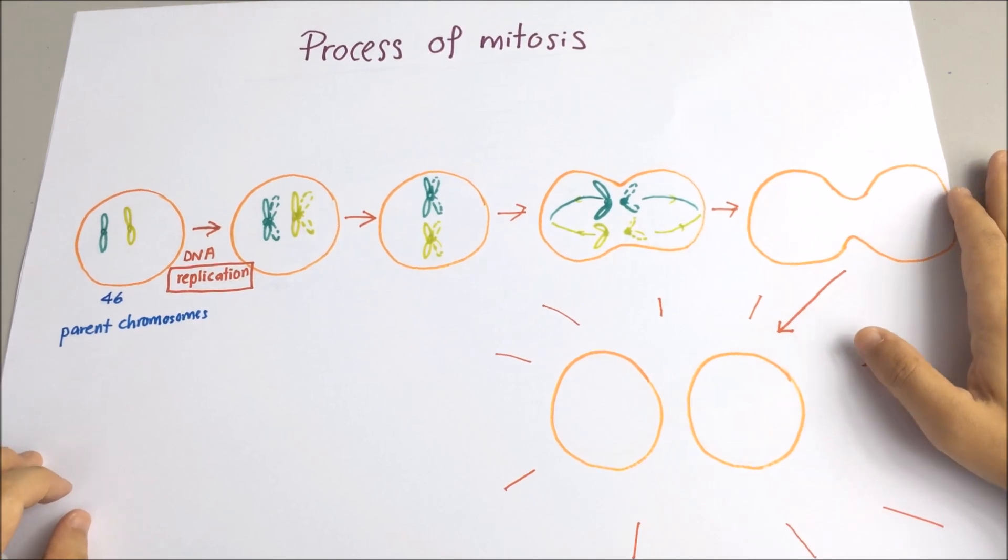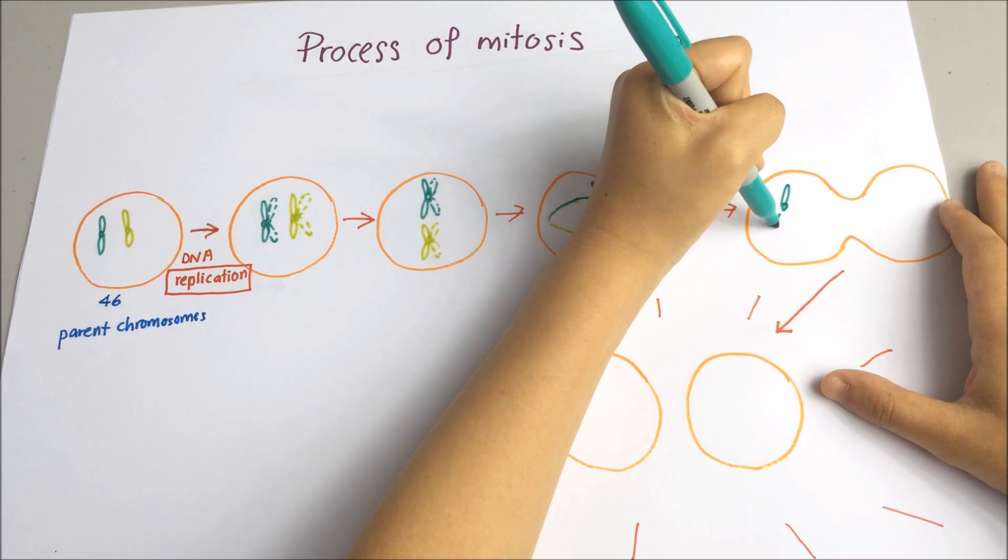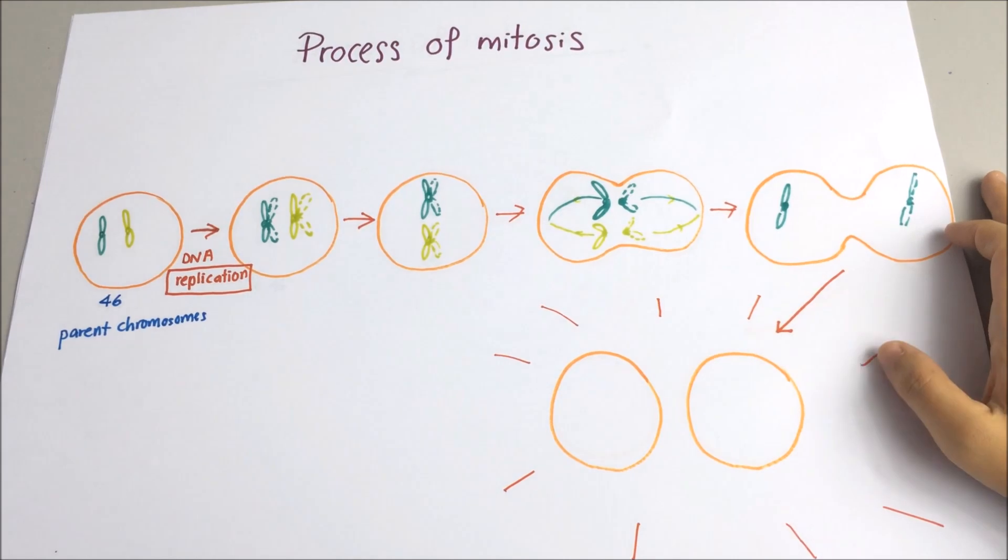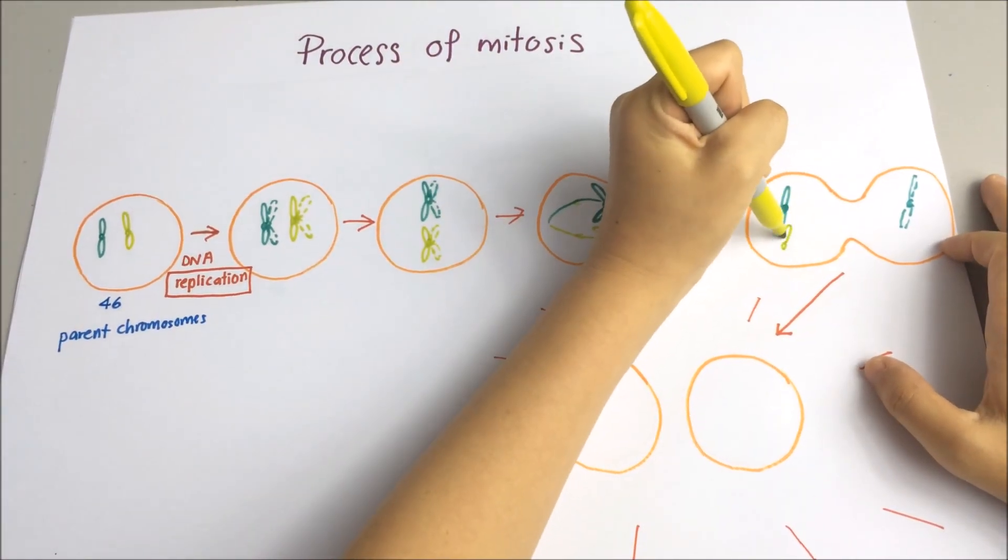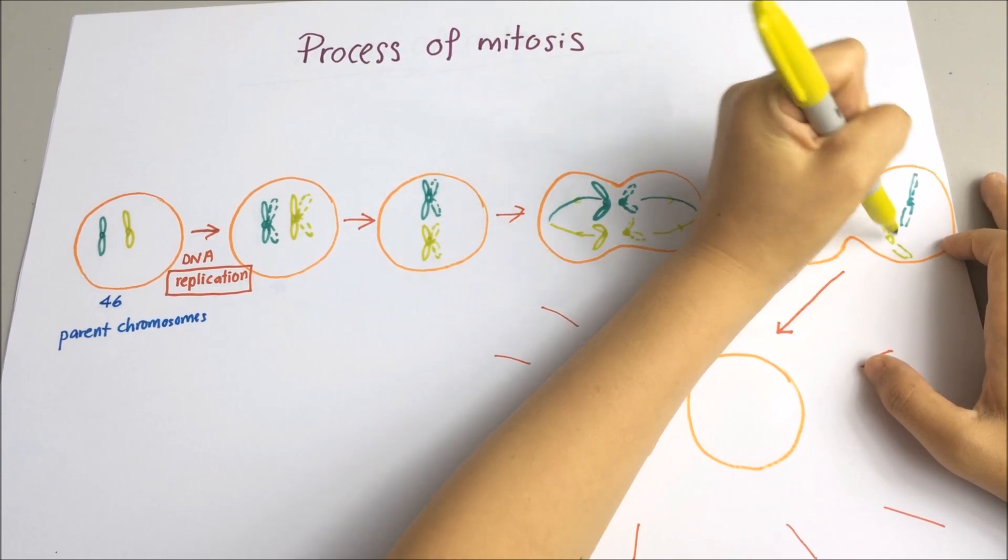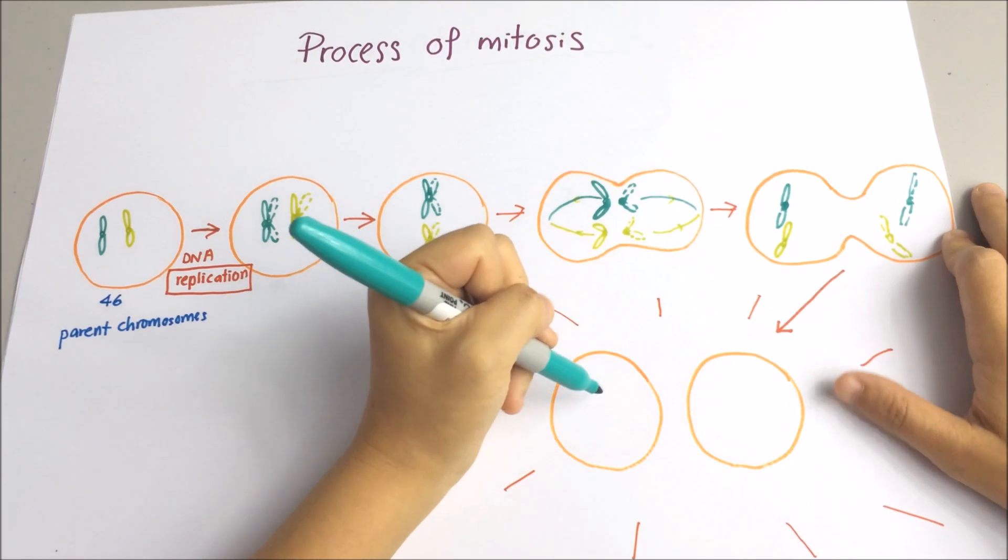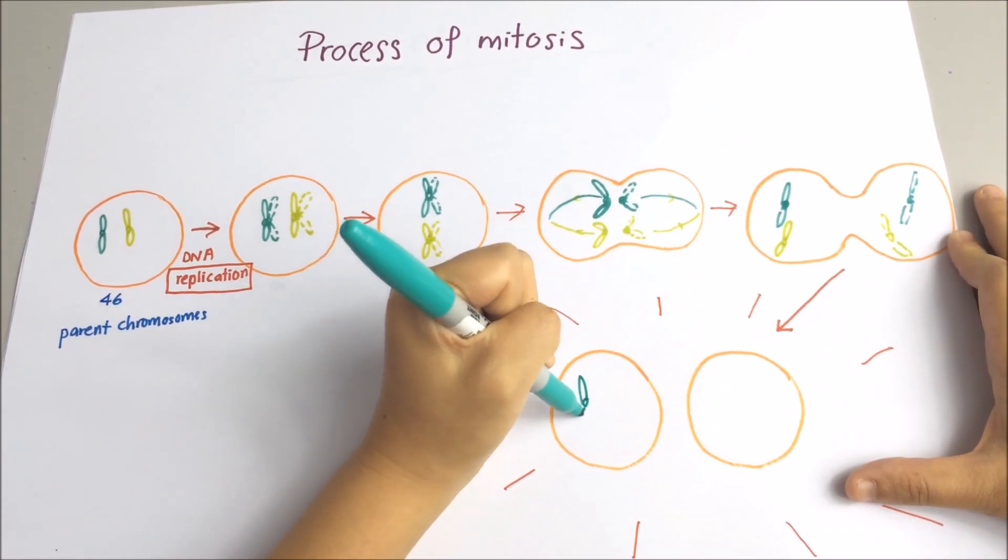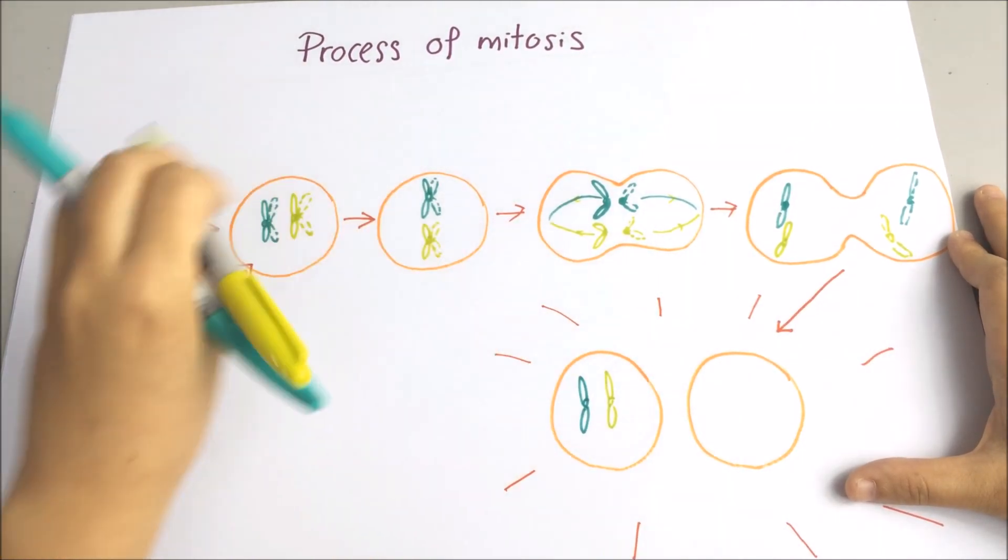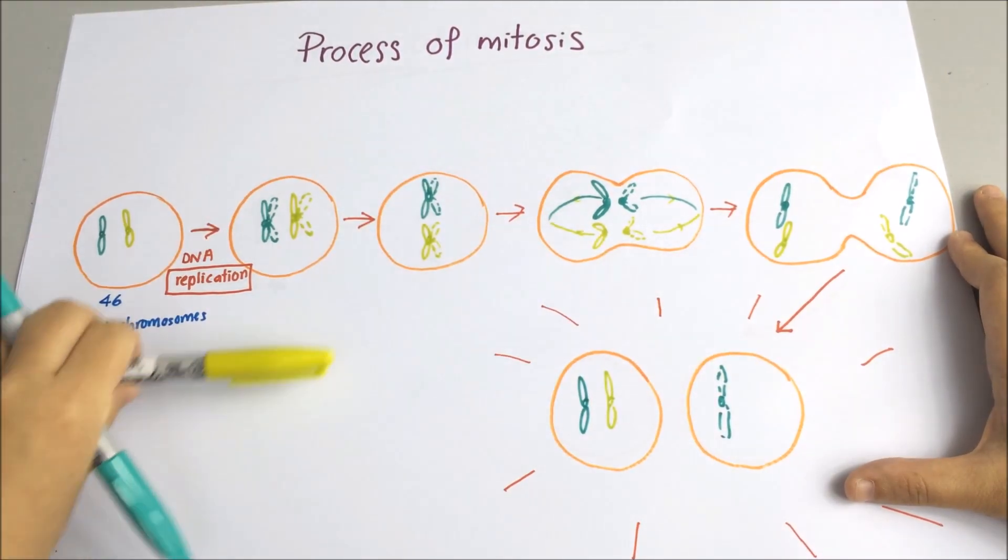So the chromosomes have already separated, four chromosomes. Eventually the cytoplasm will also divide. So you can see that at the end of the cell division, two cells are formed and each has two chromosomes.